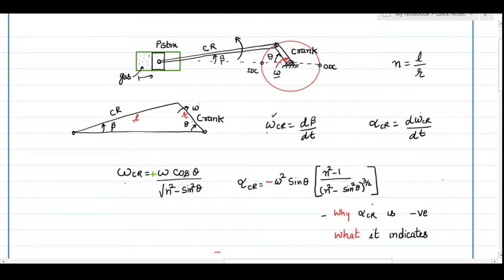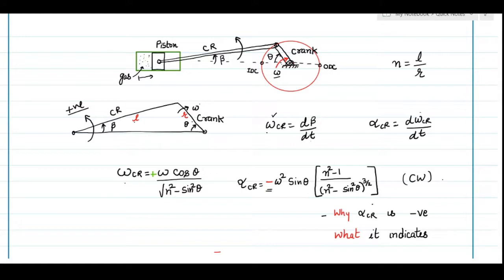Omega is the angular velocity of the crank and theta is the angle turned by the crank. The acceleration formula has a negative sign, and it is very important to understand the physical significance of this negative sign. In the case of the connecting rod, counter-clockwise rotation is considered positive. So a negative sign means the direction is clockwise. We must understand why the direction of the acceleration is clockwise even though the connecting rod is rotating counter-clockwise.